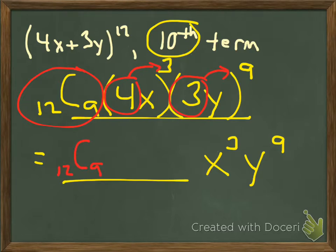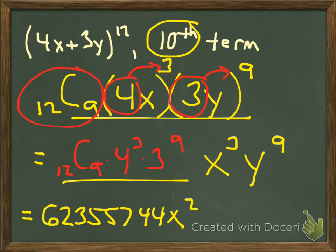So in my calculator, I'm going to put in 12 choose 9, 4 to the third power, 3 to the ninth power, and I will let my calculator do all the work. And this one comes out rather nasty. You can verify it. But this comes out as, and I have to cheat and look at my sheet here, 62,355,744 x squared. I gave the wrong term here, guys. Let's pause.